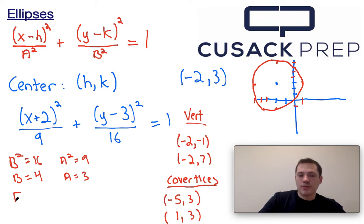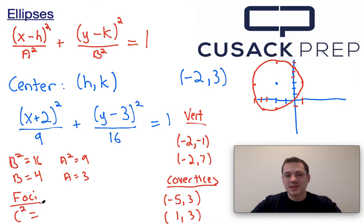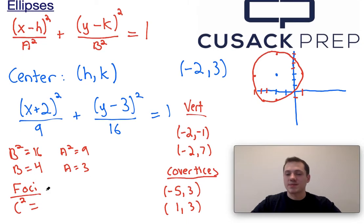Finally, we have one other important point that we have to find, and that's our foci. Now to find the foci, we use this value c squared. And sometimes it's written as a squared minus b squared. Sometimes it's b squared minus a squared. But what I really want you to take away is it's always the larger of these two denominator values minus the smaller.